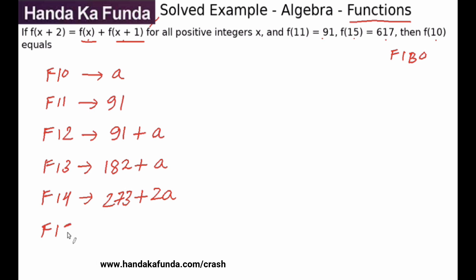What will be f15? f15 will be the sum of the previous two values, so 182 and 273 is 5, 18 plus 27 is 45, 455 plus 2a plus 2a plus a is 3a. But f15 is already given to me in the equation as 617.